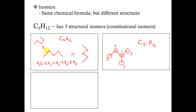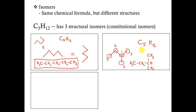In each of these cases, the condensed structural formula confirms that the structures are the same: CH3-CH2-CH2-CH2-CH3. Same molecule, just drawn differently.